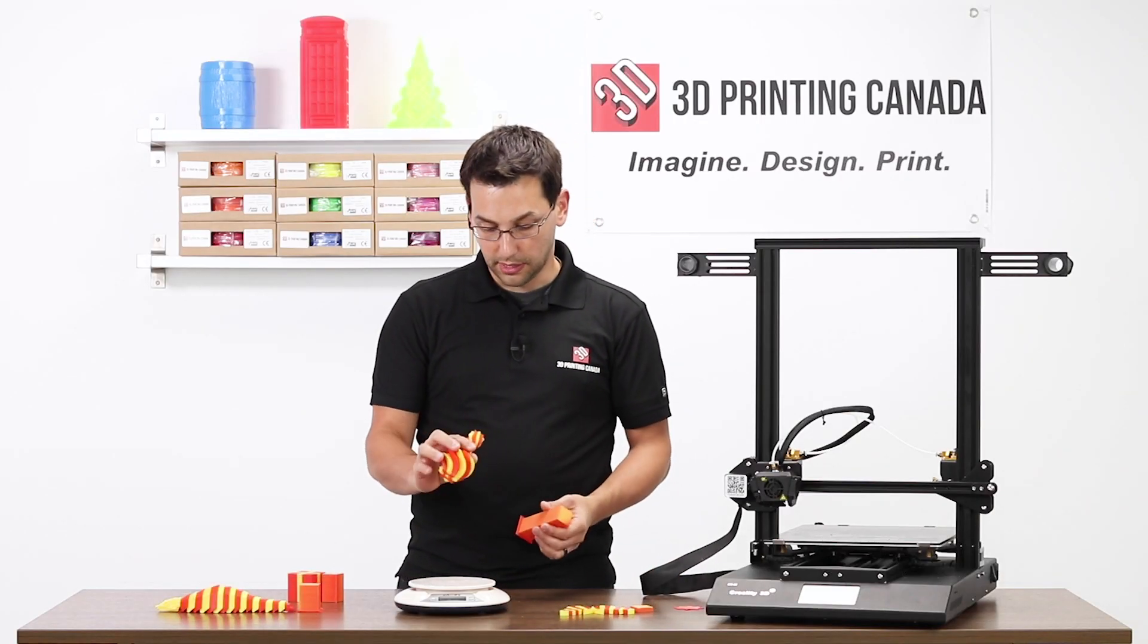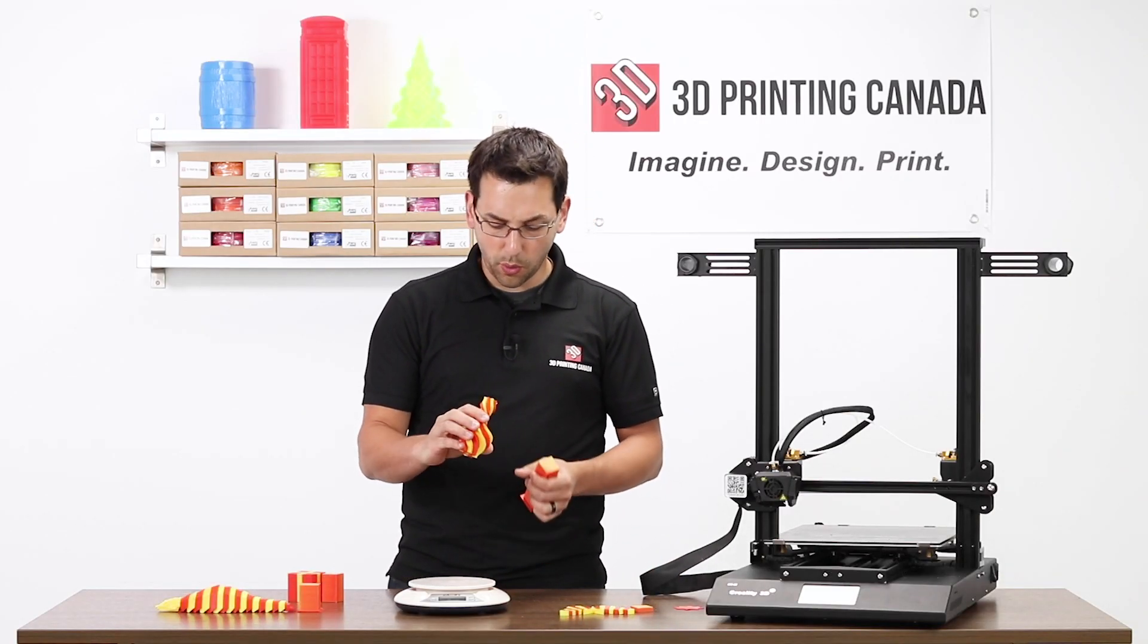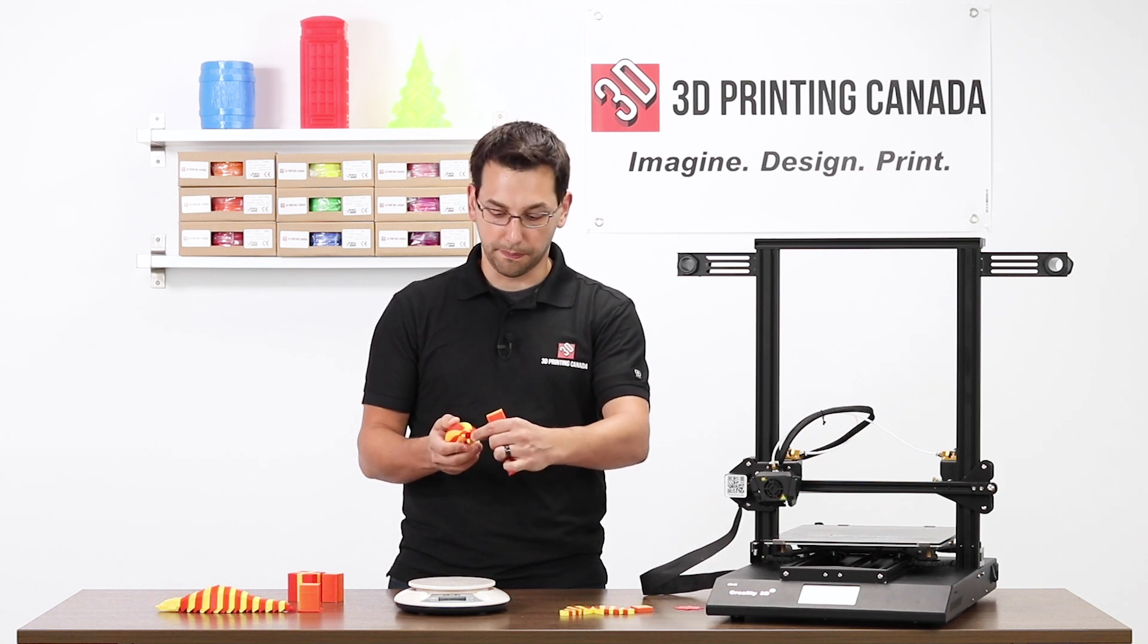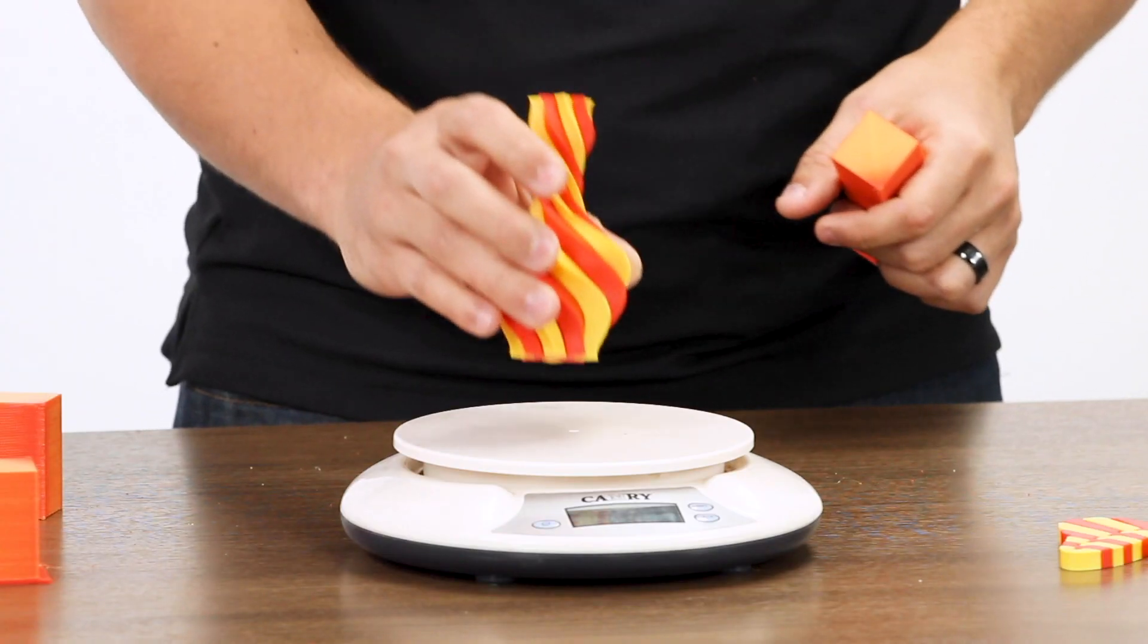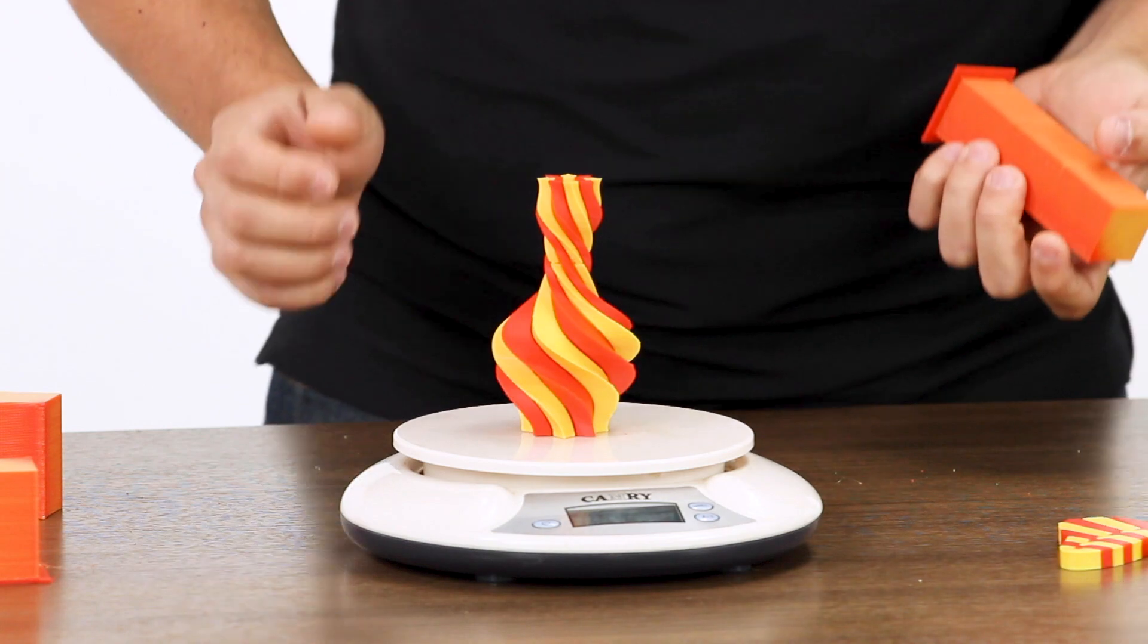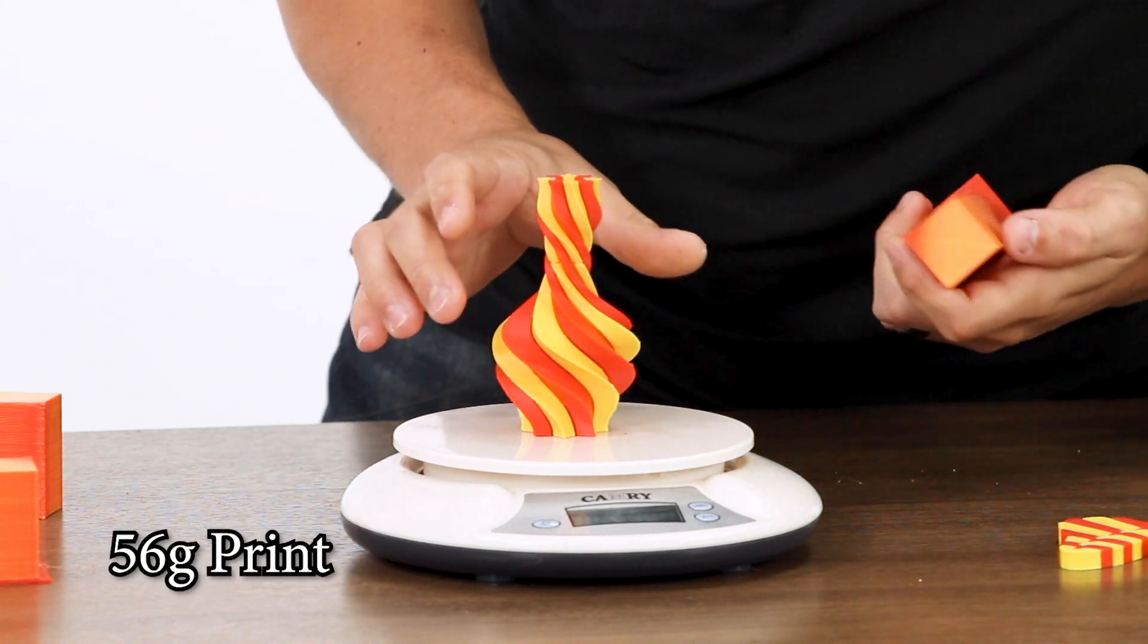For the vase, being that it's not quite as hollow as a normal vase, there is some kind of meat to the outside shell there. The vase is 56 grams.